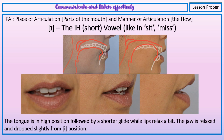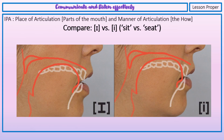Eh. Ea. This sound occurs in the words him, been, women.